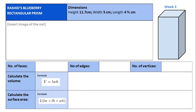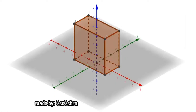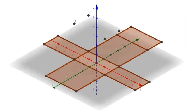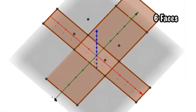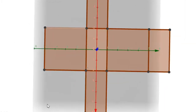Here we have the first shape: the rectangular prism. We need to know how many faces, how many edges, and how many vertices the rectangular prism has. If you unfold this, you can count six faces. It has six faces, and this shape in front of you is called the net of the rectangular prism.